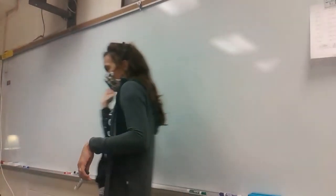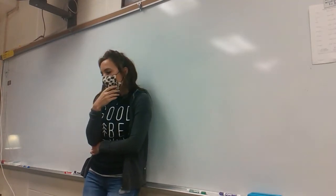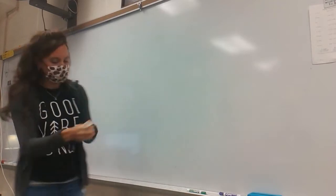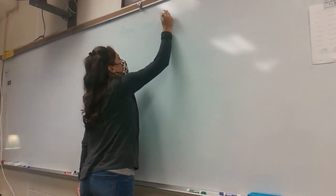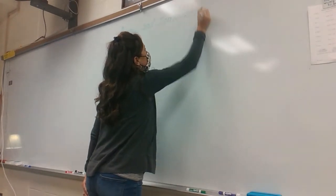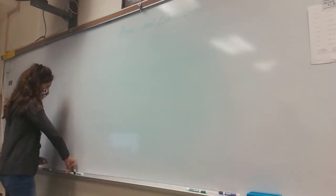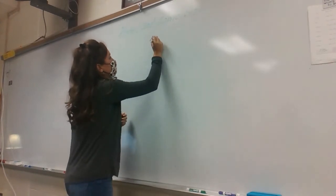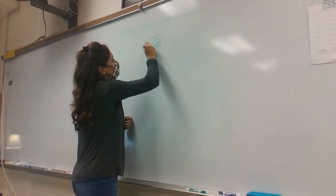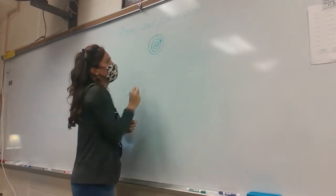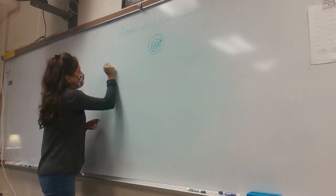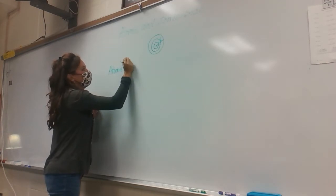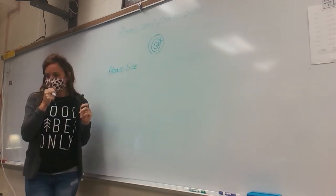Ionization energy was the first periodic trend we talked about yesterday — it has to do with forming ions. Today we're going to talk about atomic and ionic size and their trends. Atomic or ionic size is literally the distance from the nucleus to the valence electrons — it's a measurement of how far it is from the nucleus to the outermost electrons.